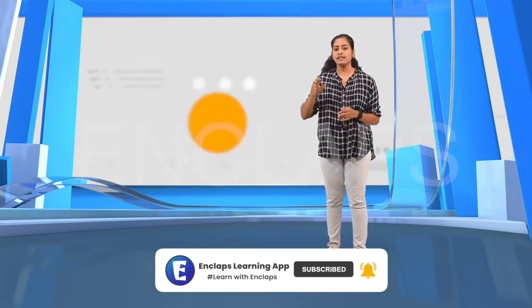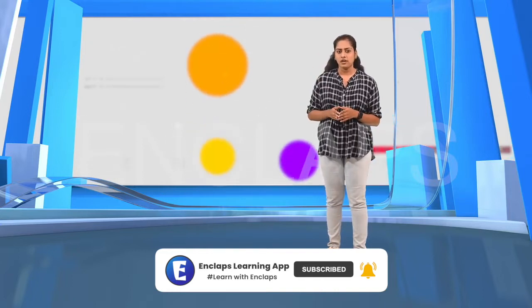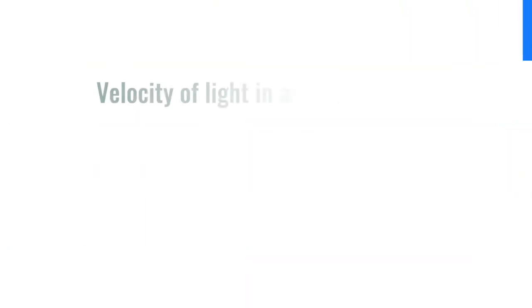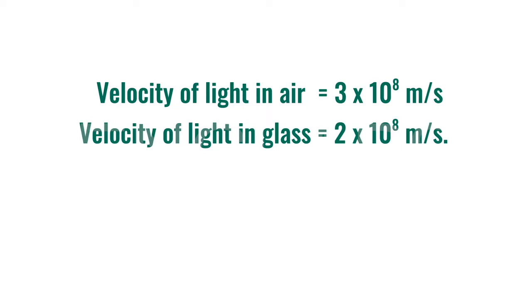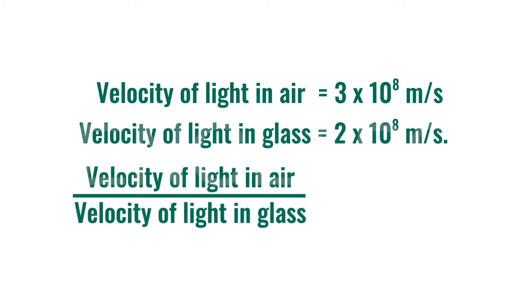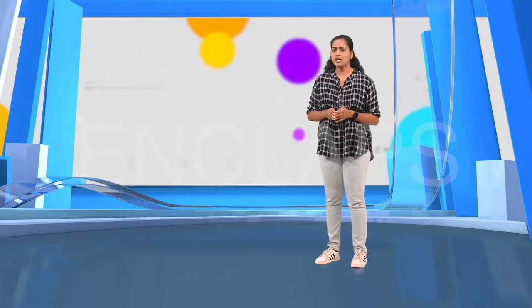Consider an air-glass interface. Do you recall the values for velocity of light in air and glass? For air, it is 3×10⁸ meters per second and for glass it is 2×10⁸ meters per second. Now, let's take the ratio of these velocities. We get the ratio of velocities as 1.5. If you recall, 1.5 is the refractive index of glass with respect to air.